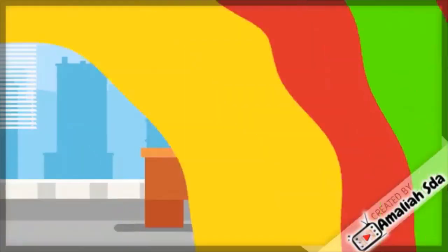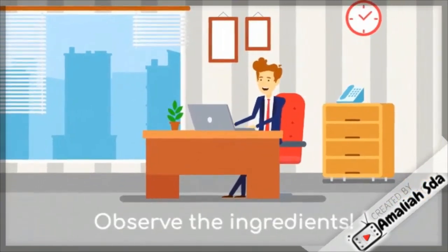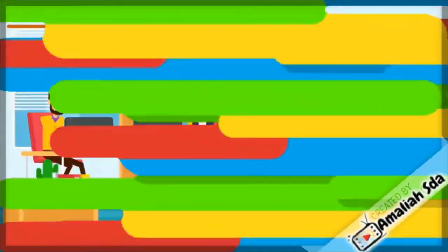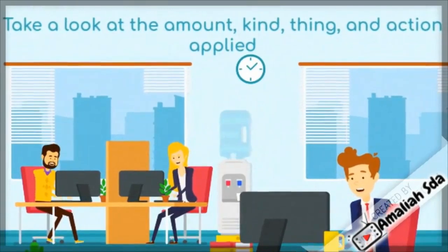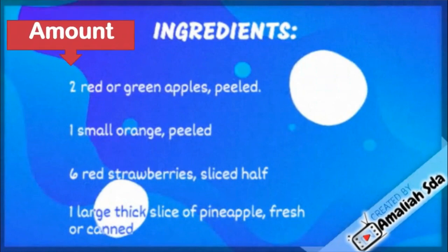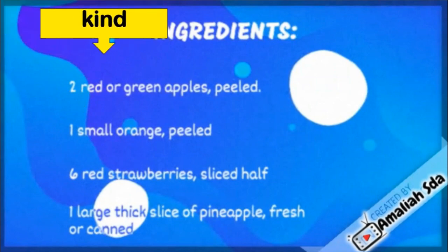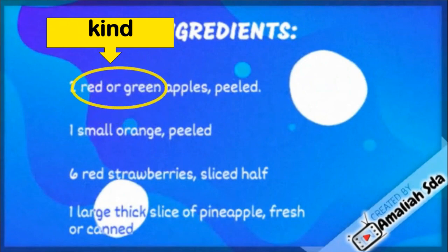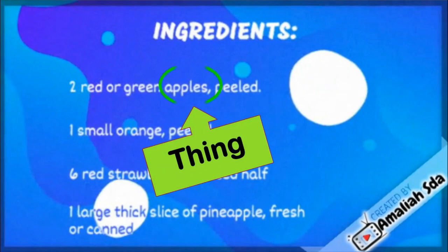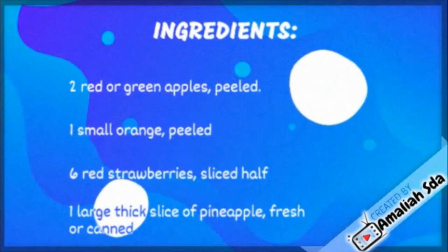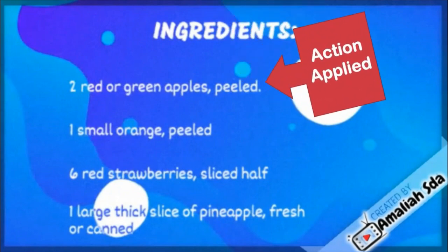It's time for you to analyze the text. Observe the ingredient — take a look at the amount, kind, thing, and action applied. The amount refers to the numbers needed. The kind is the type of ingredient. The thing is the ingredient itself. And the action applied — for example, peeled.